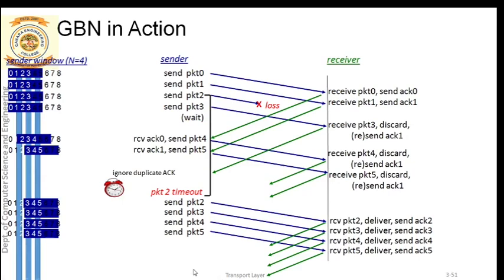The sender should understand that once ACK 5 arrives, it is a cumulative acknowledgement for all four packets - ACK 2, ACK 3, ACK 4 and ACK 5 - received in order. This cumulative acknowledgement concept is present in Go-Back-N protocol and is an advantage: instead of sending one packet at a time, Go-Back-N sends multiple packets at a time.